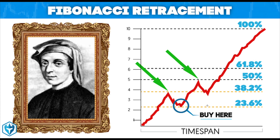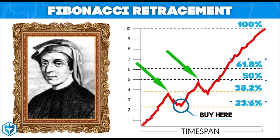This is how Fibonacci Retracement looks. There are some levels like 38, 50, and 61, which are very important levels. Fibonacci Retracement is actually a short-term price correction — for example, a short-term correction during an overall trend.